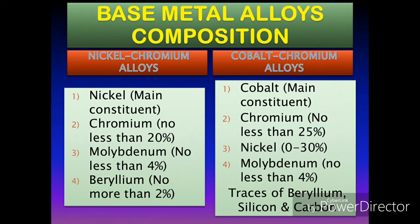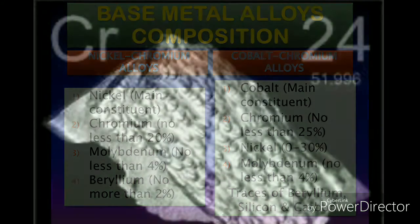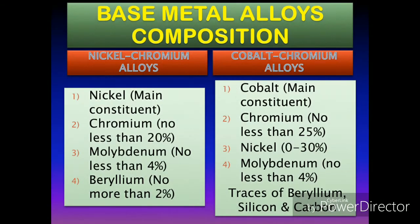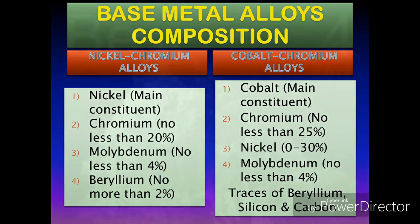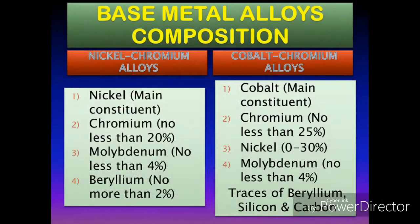The nickel-chromium casting alloy contains nickel, chromium, molybdenum, and beryllium. Nickel is the main constituent, whereas chromium should not be less than 20%, molybdenum should not be less than 4%, and beryllium should not be more than 2% in the chemical composition of the nickel-chromium casting alloys.